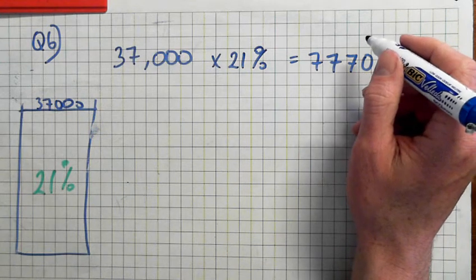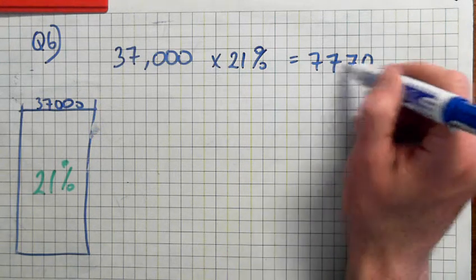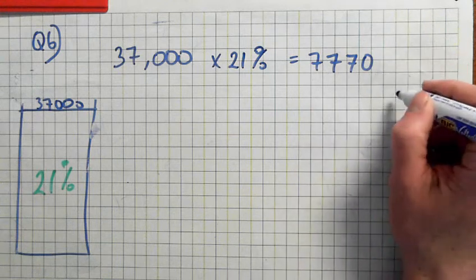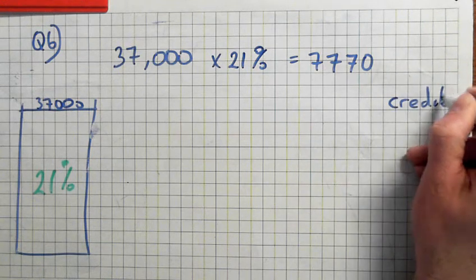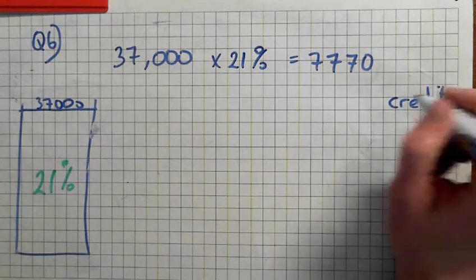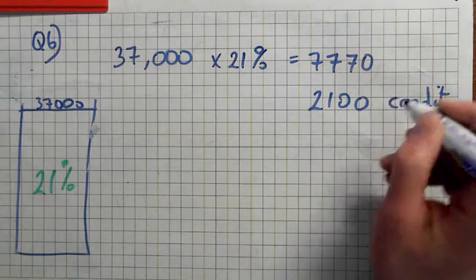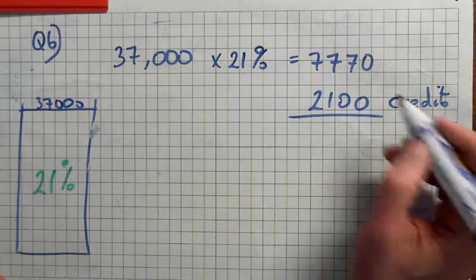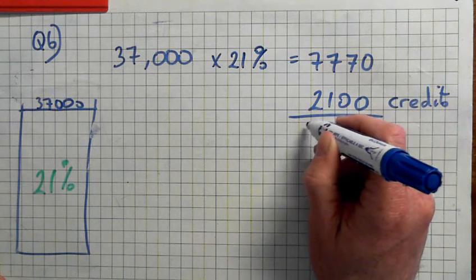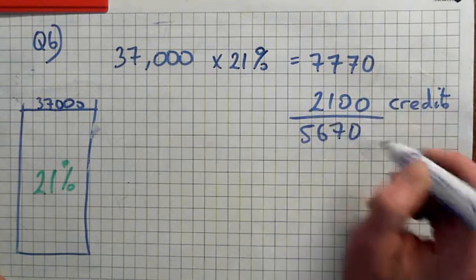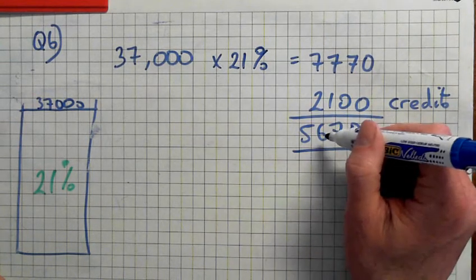Alright, next part of the question. That's the tax he pays. His tax credits are 5670, so you subtract that. This is the tax that he has to pay.